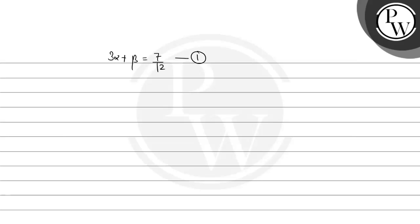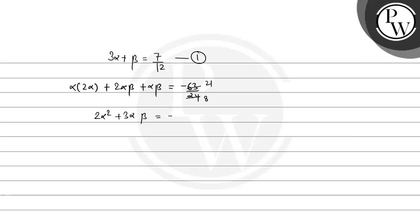Then the other information: the sum of products of roots taken two at a time: α multiplied by 2α, plus 2α times β, plus α times β equals minus 63 divided by 24. This simplifies to 2α² plus 3αβ equals minus 21 divided by 8. Consider this as equation 2.